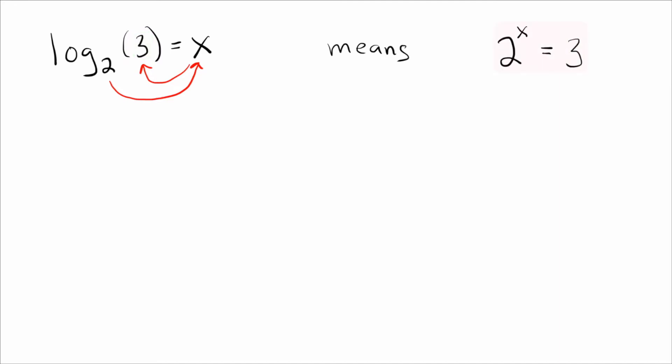And then you have to ask yourself, 2 to what power equals 3? And the answer is, I don't know. Right? We know that 2 to the 1 power is 2, and we know that 2 squared is 4. So 3 is somewhere in between those two, so I don't know what the answer is. We can't do it in our heads.